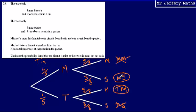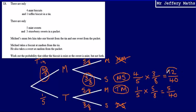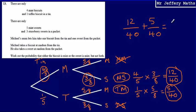To work out the probability that he chooses a mint biscuit and a strawberry sweet, we multiply the probabilities together: four fifths multiplied by three eighths gives us 12 over 40. Then the probability of choosing a toffee biscuit and a mint sweet is one fifth multiplied by five eighths, which gives us five over 40. All that's left is to add them together: 12 over 40 plus five over 40 equals 17 over 40.